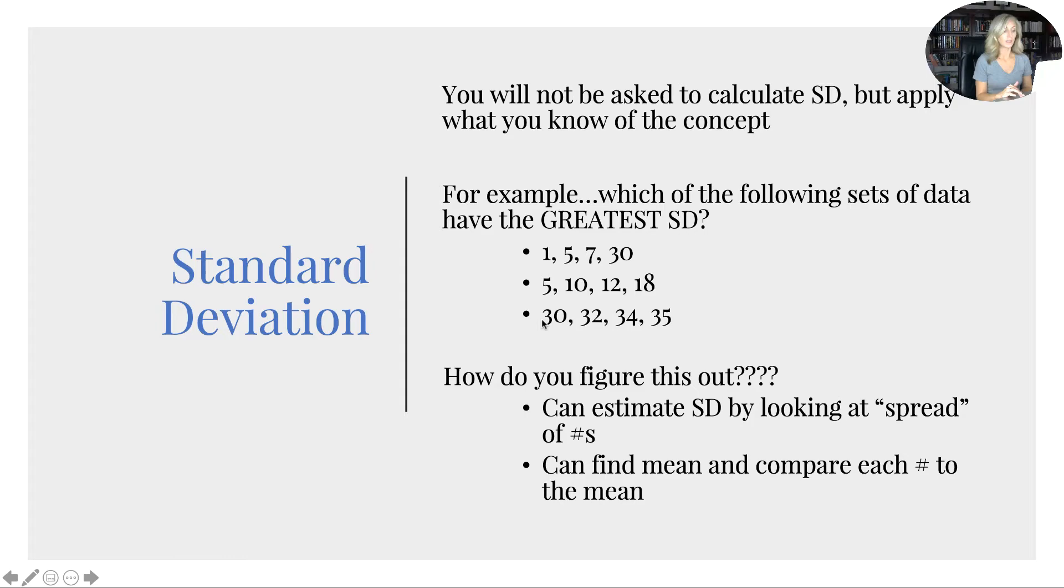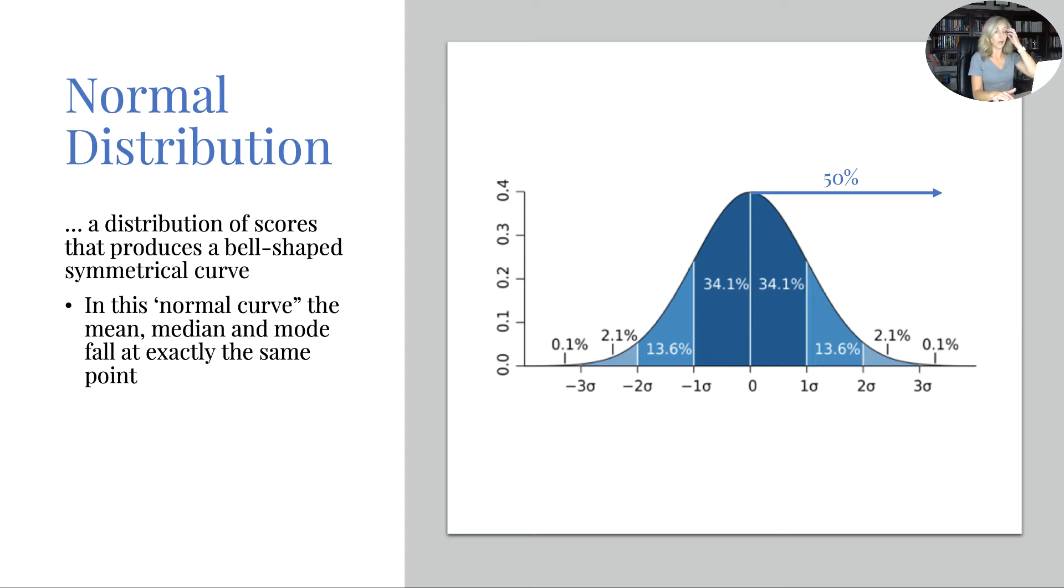This one in the middle has probably the next smallest. But because of that 7 to 30 jump, that top one really has the biggest standard deviation. And you could really figure that out in most cases because of the range. So again, how did you figure this out? You can estimate standard deviation by looking at the spread or the range of the numbers. You could also find the mean and compare each number to the mean if you wanted to go the longer route.